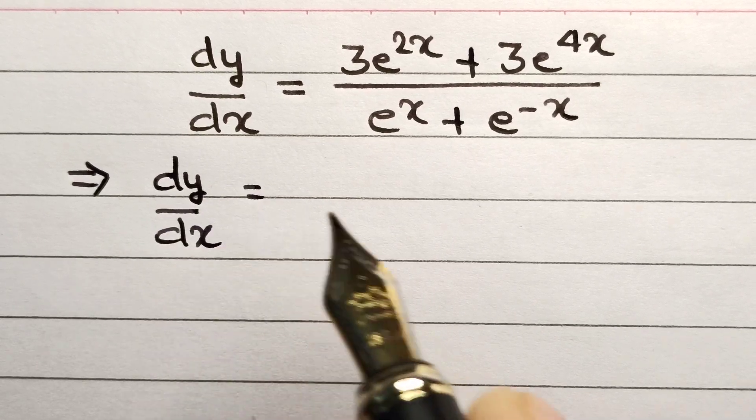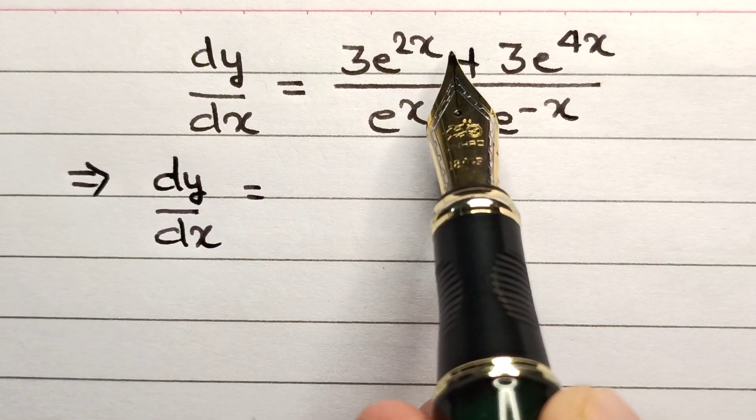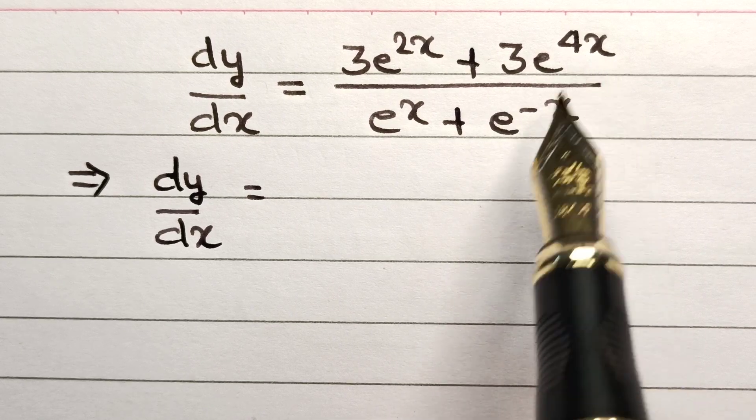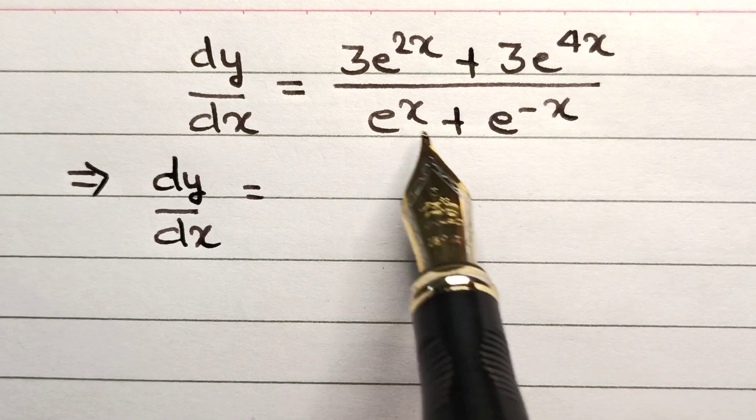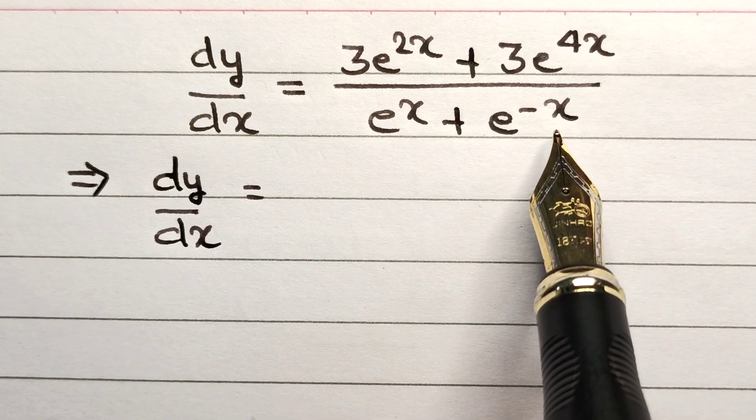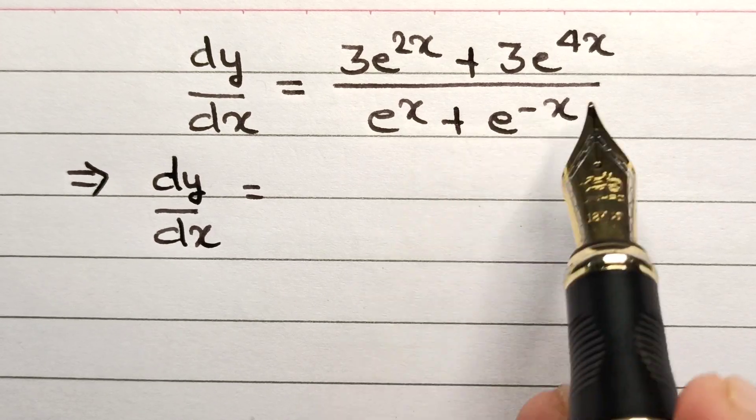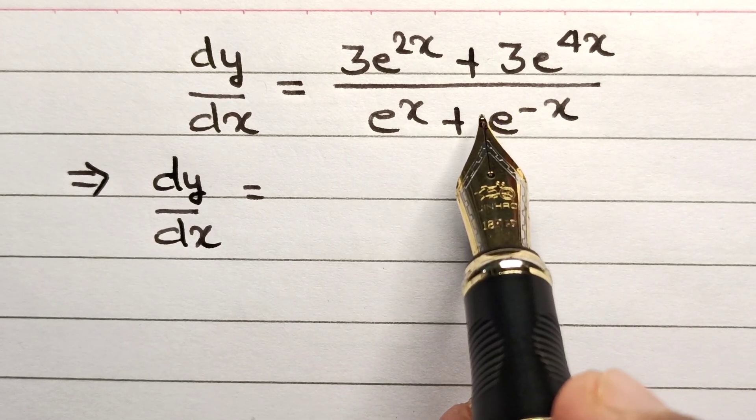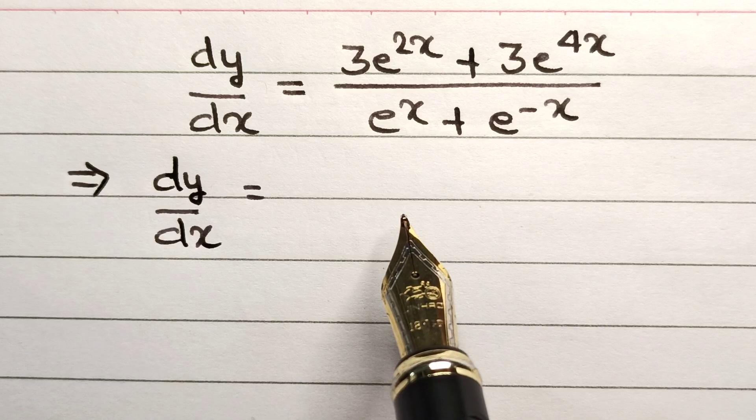dy/dx in the question is given as 3e^(2x) plus 3e^(4x) divided by e^x plus e^(-x). Our first task is to simplify this expression on the right-hand side so that the value of y can then be calculated.